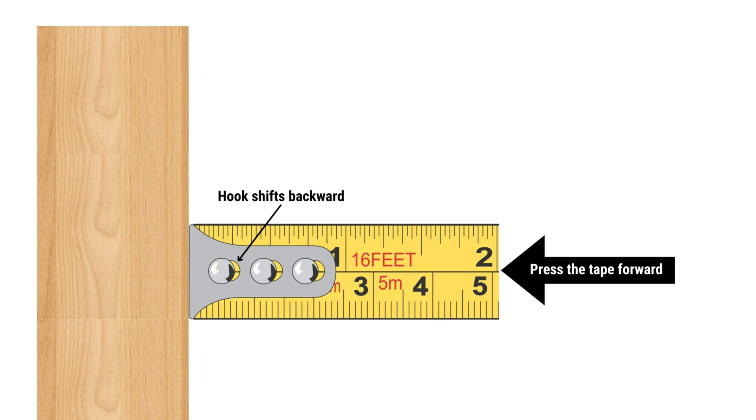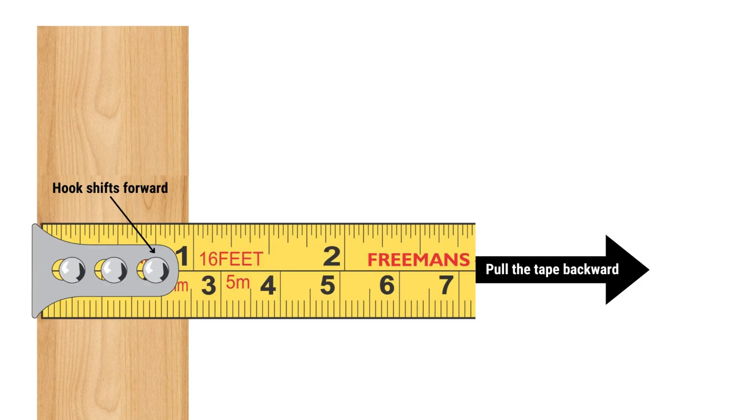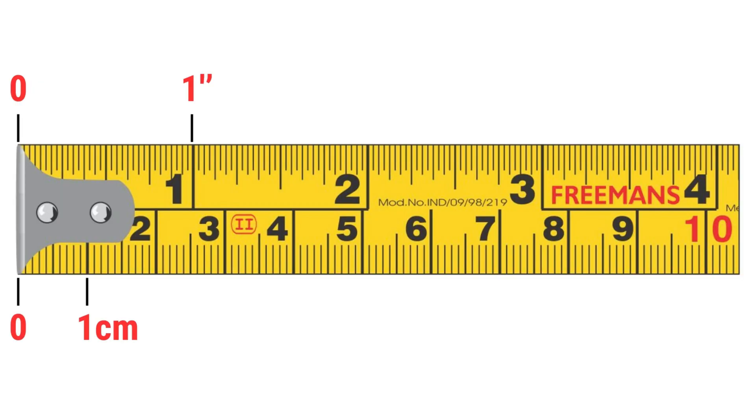When measuring against a surface, press the tape forward. When measuring from an edge, pull the tape slightly outward. For extra accuracy, you can start measuring from the 1 inch mark, a technique known as burning an inch. Just remember to subtract 1 inch from your final reading.